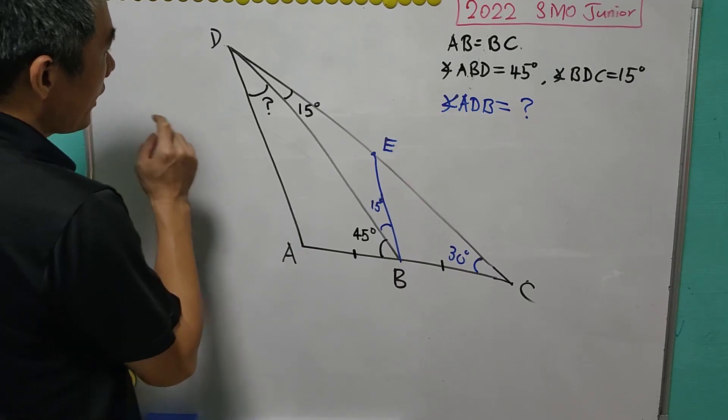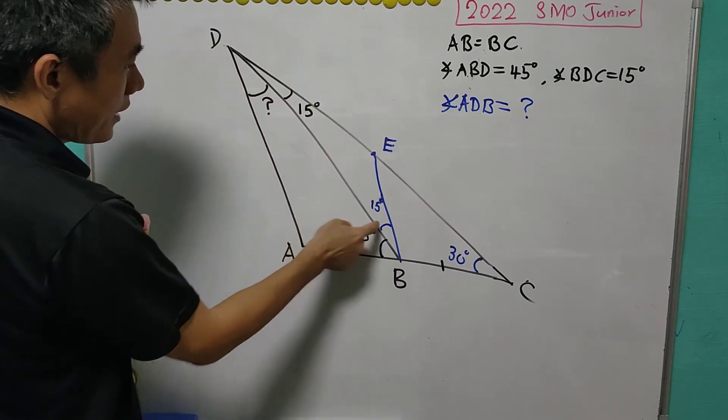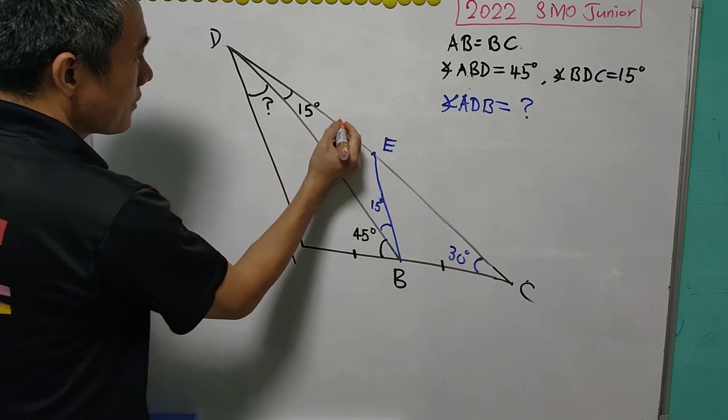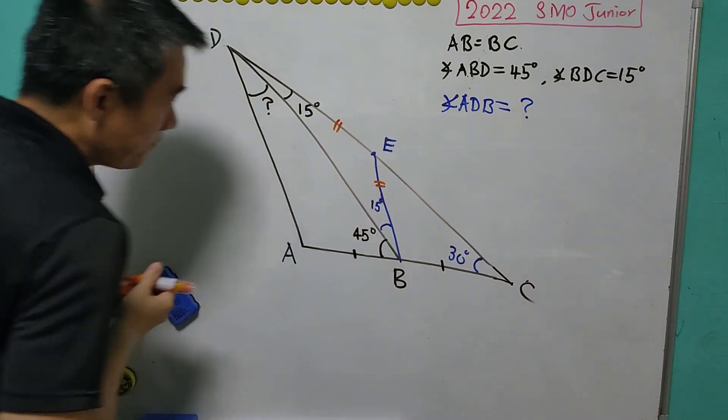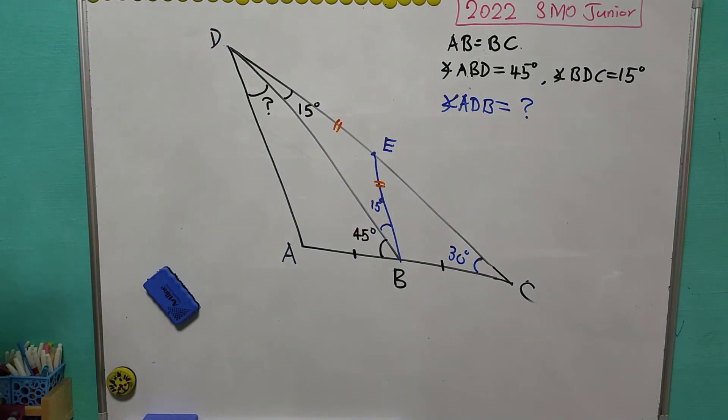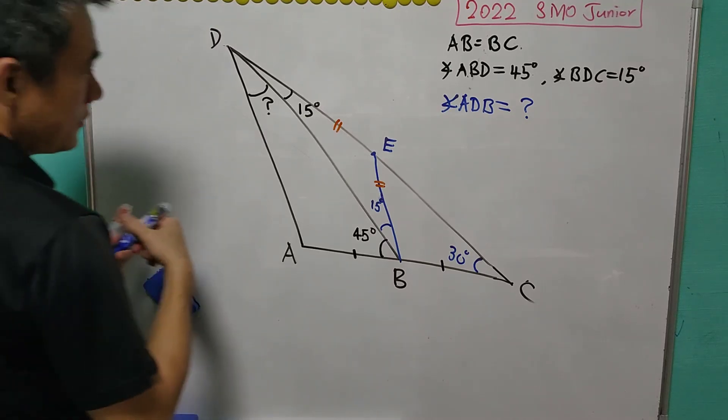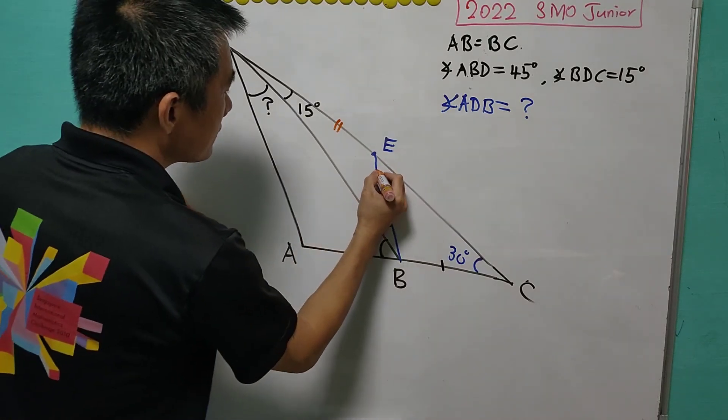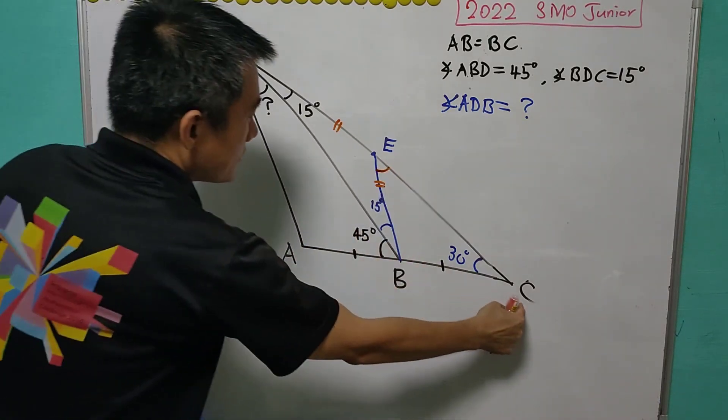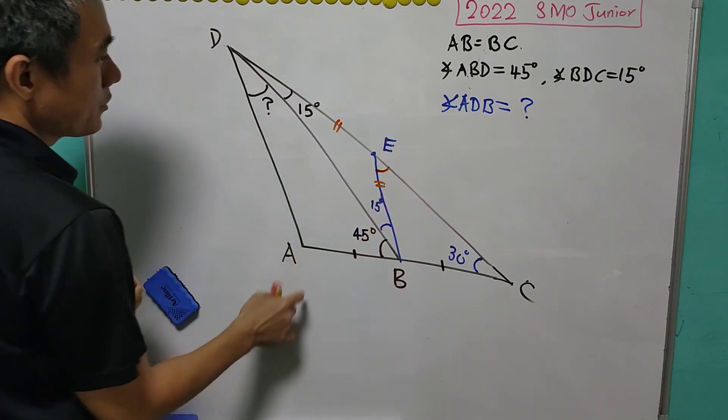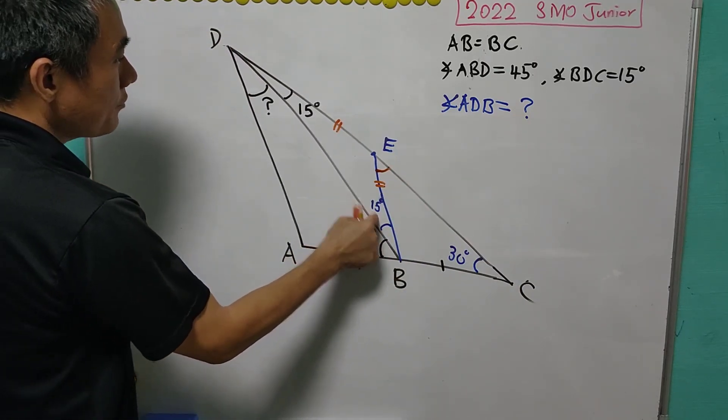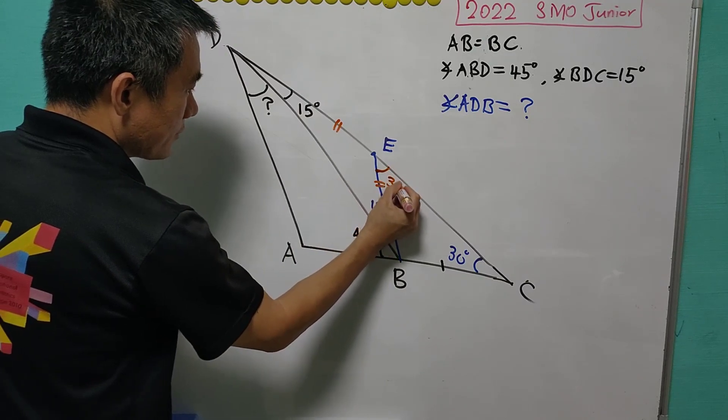In this case, the triangle BDE is an isosceles triangle and therefore BD equals BE. And note that the angle CEB will be equal to the sum of these two angles. That is 30 degrees.